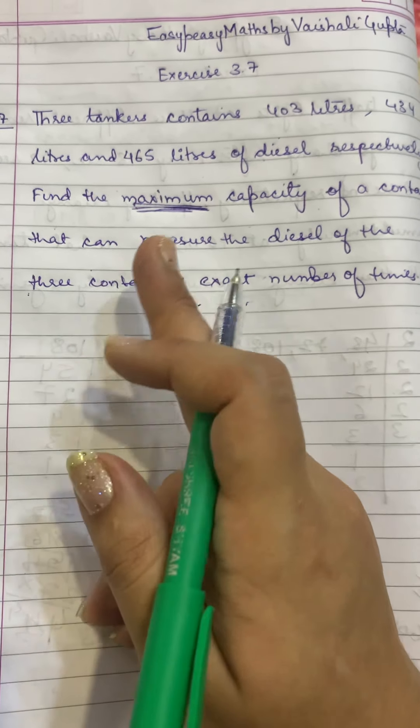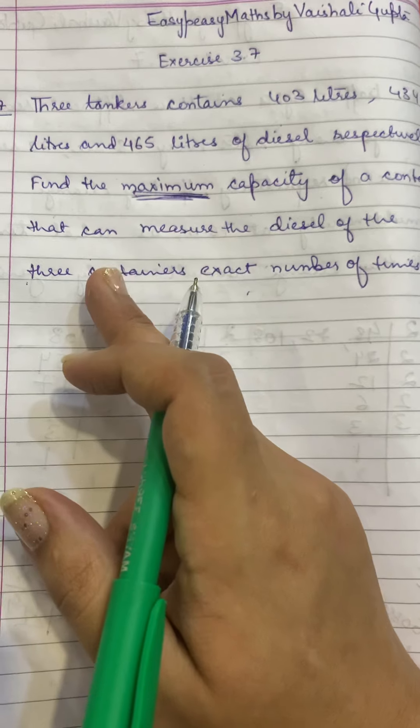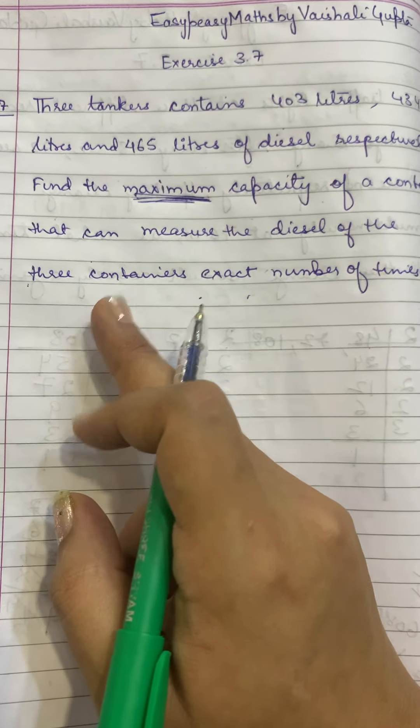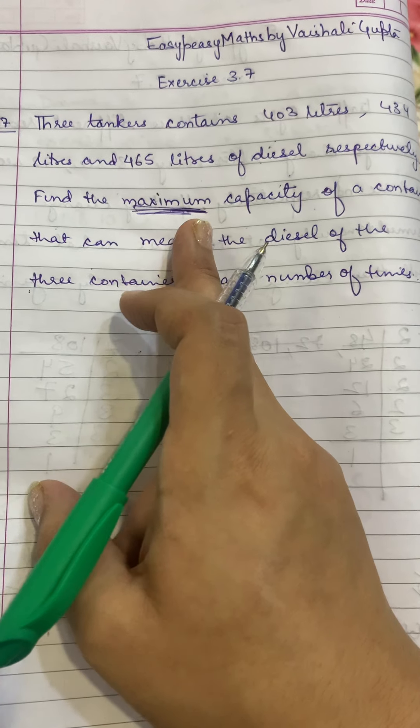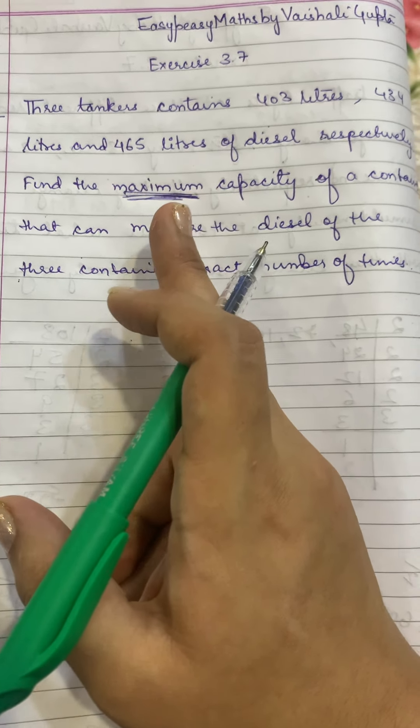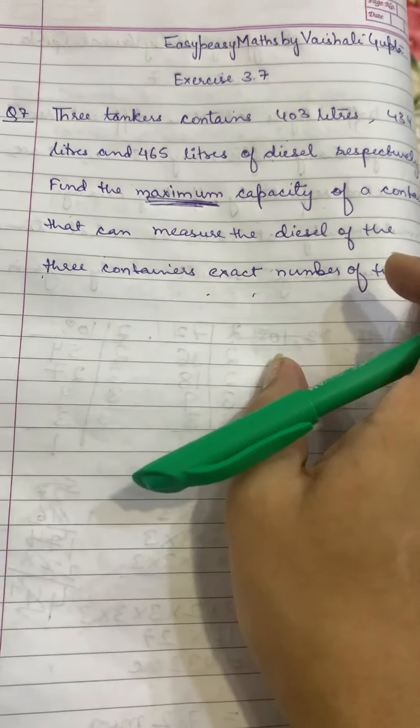It means that every time we can measure it, it doesn't mean that we have half measure it. It should be full and it should be exact number of times. So because the maximum is fixed, we know that it should be a common factor, and because the maximum is the highest common factor, that is HCF.